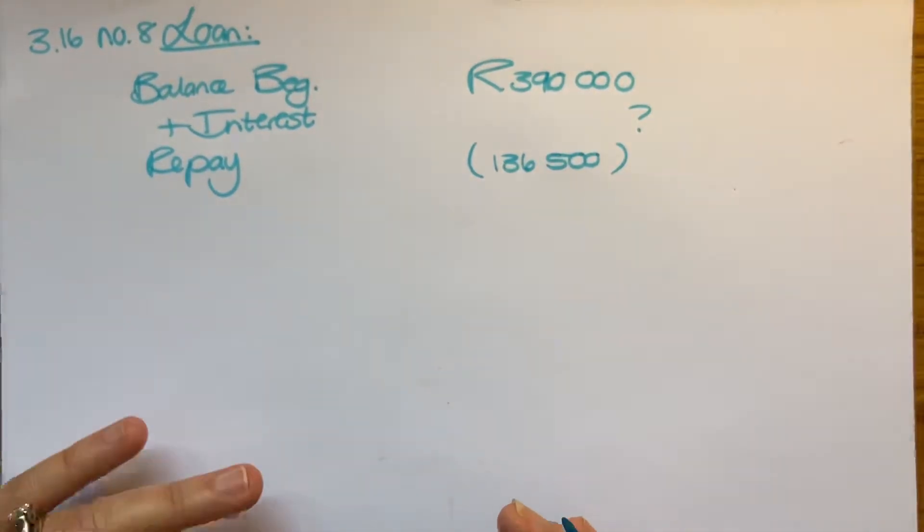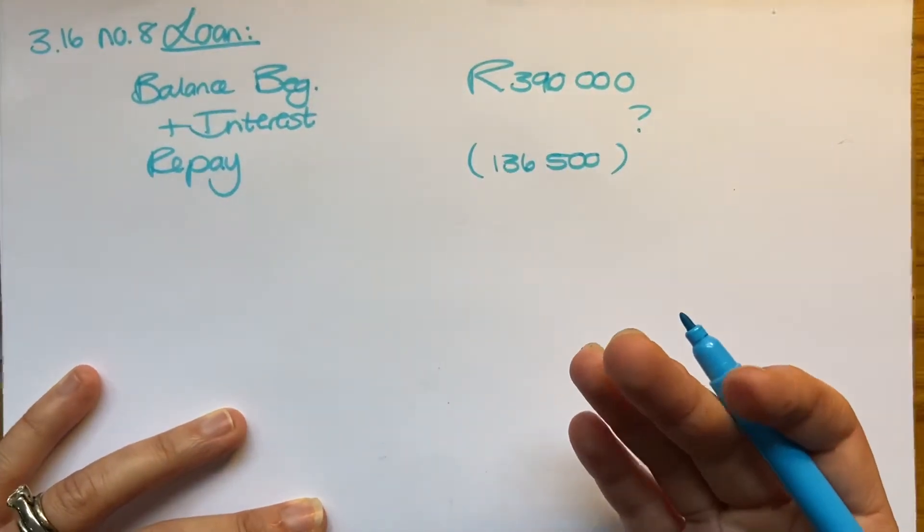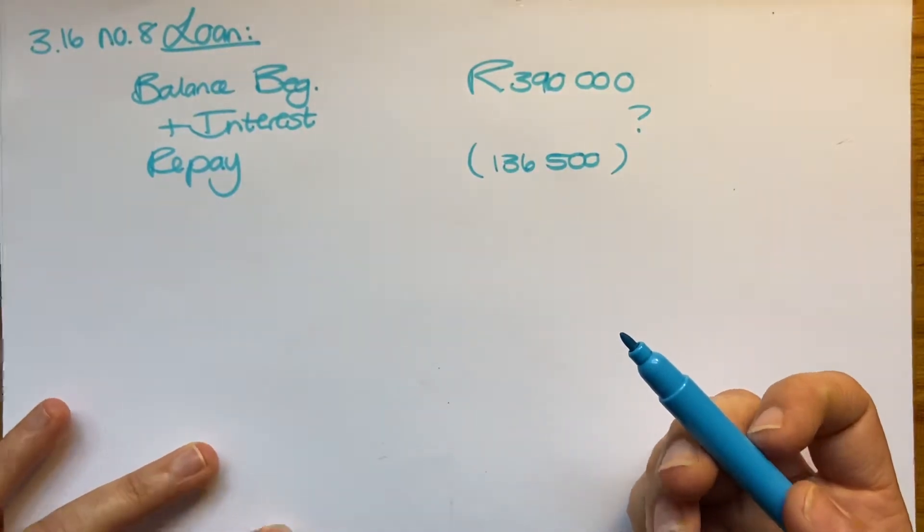That's for the following year, so the only relevance that has is for current portion of loans. So we're not going to look at the 78,000, but then I know that I've got an answer.